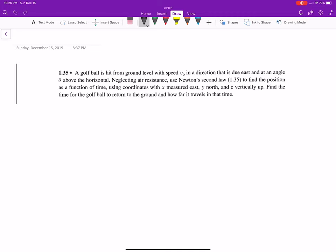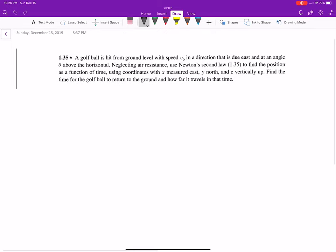Okay, let's get into it. A golf ball is hit from ground level with speed v naught at a direction that's due east, at an angle theta above the horizon. Neglecting air resistance, use Newton's second law to find the position as a function of time using coordinates with x measured east, y north, z vertically up.